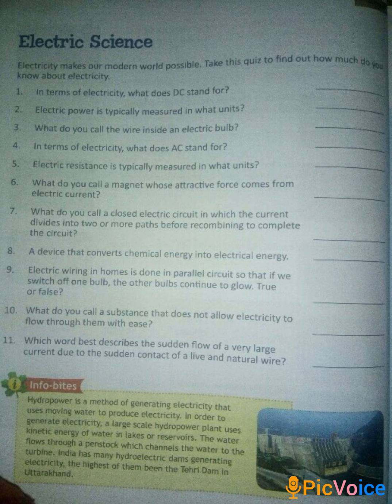Number 7. What do you call a closed electric circuit in which the current divides into two or more parts before combining to complete the circuit? The answer is parallel circuit.